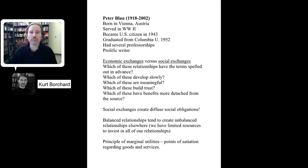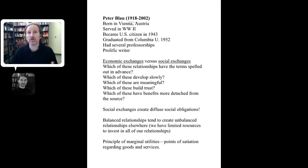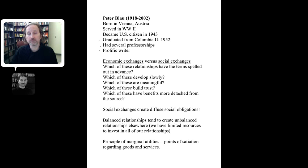Our next theorist, Peter Blau, was born in Vienna, Austria. He grew up watching his parents, who were secular Jews, face discrimination as Austria was annexed by Germany in the Anschluss — the ramping up toward World War II. Lucky enough, Blau was able to immigrate to the United States, became a citizen in 1943, served in the U.S. Army in WWII, graduated from Columbia University in 1952, and went on to be a professor at several prestigious universities and an incredibly prolific writer — publishing dozens of articles and 11 books.